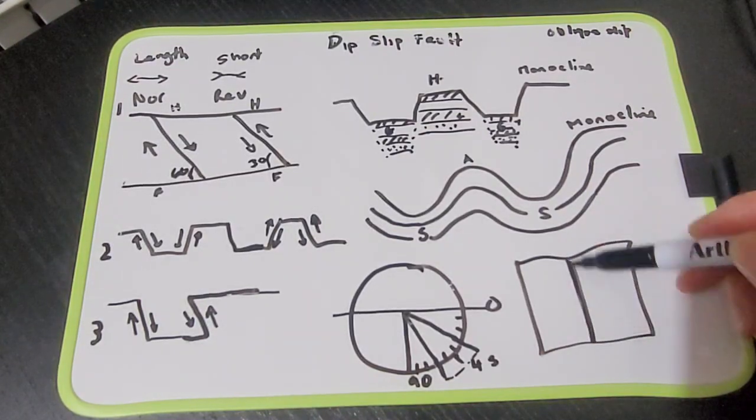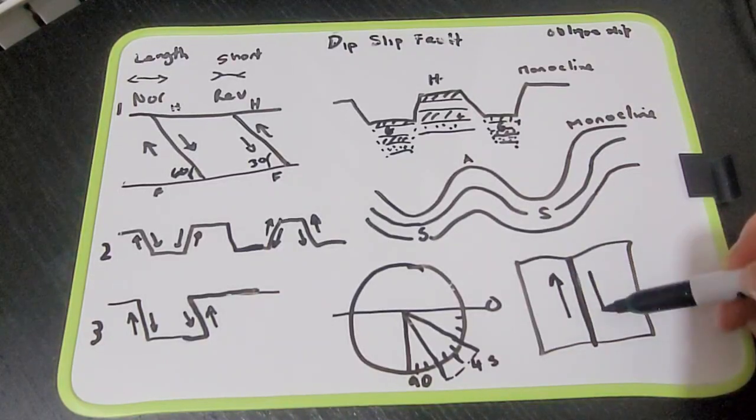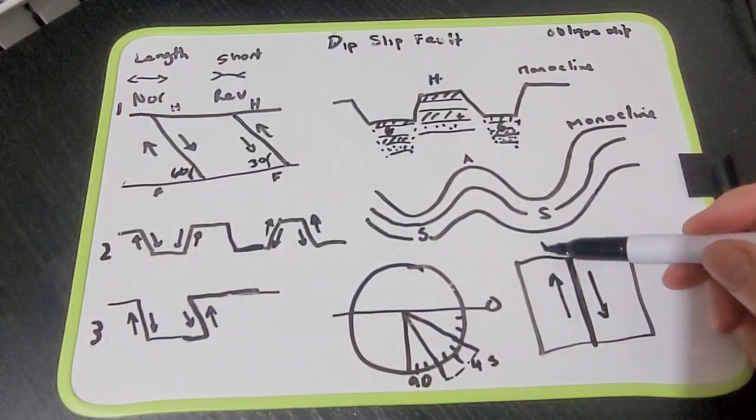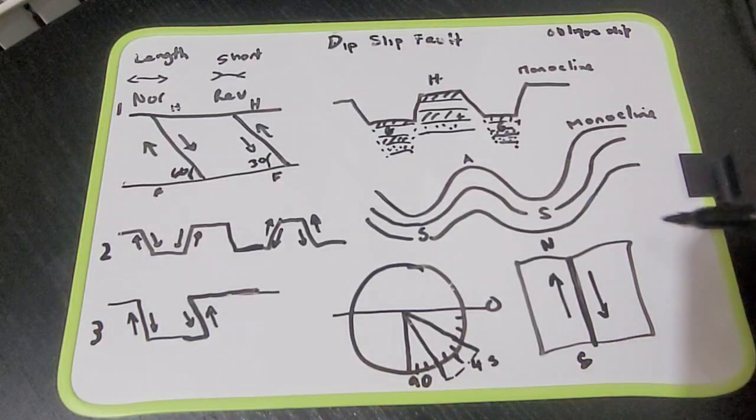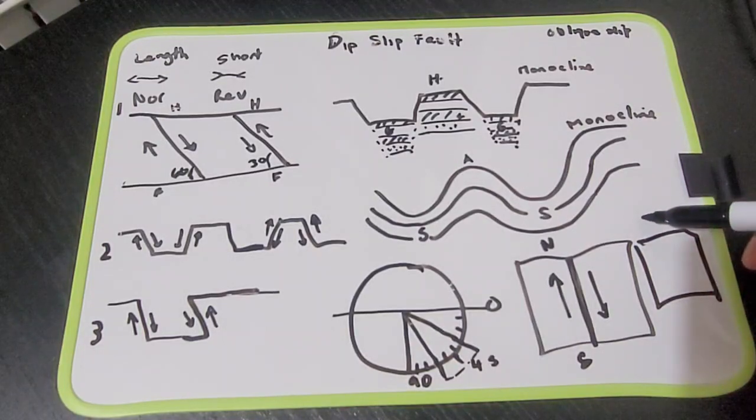So here's the fault system. We have movement this way and that way. So that's maybe north, that's south. And if we look side on, we also have, so this is the ground.